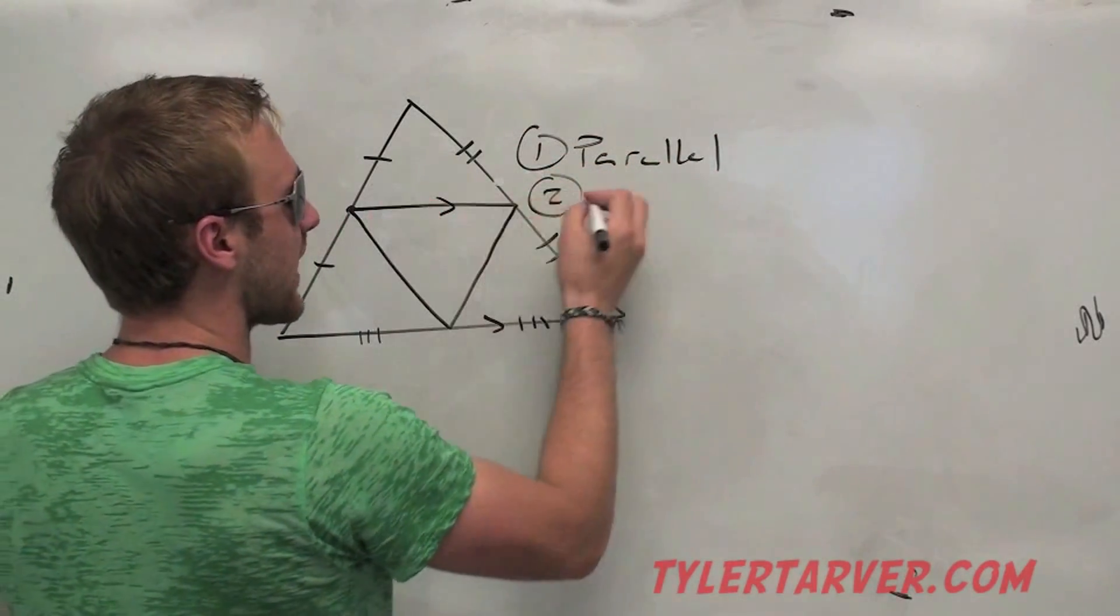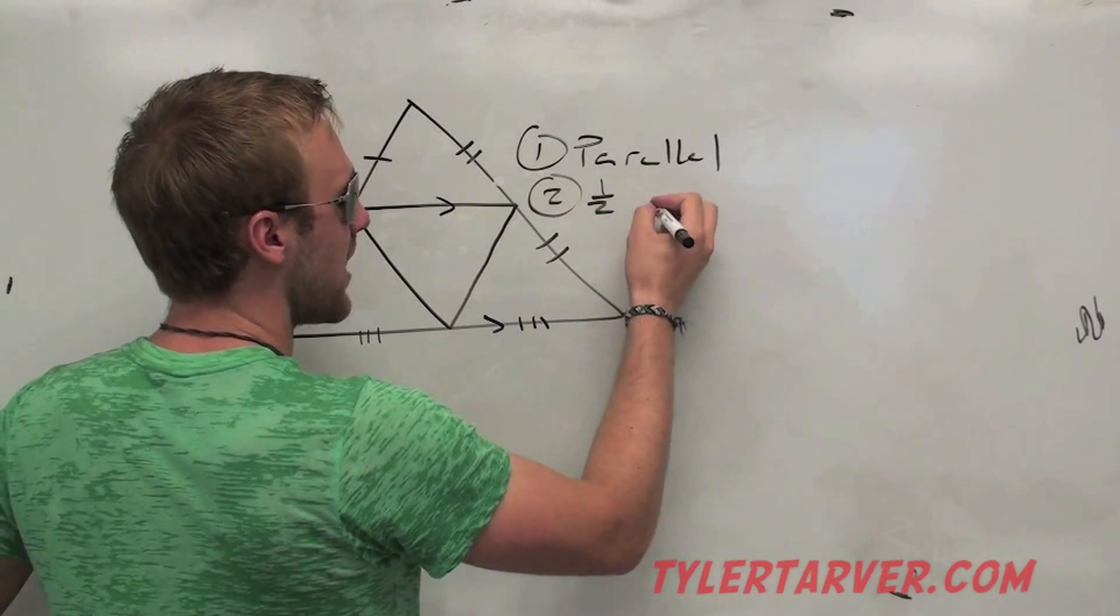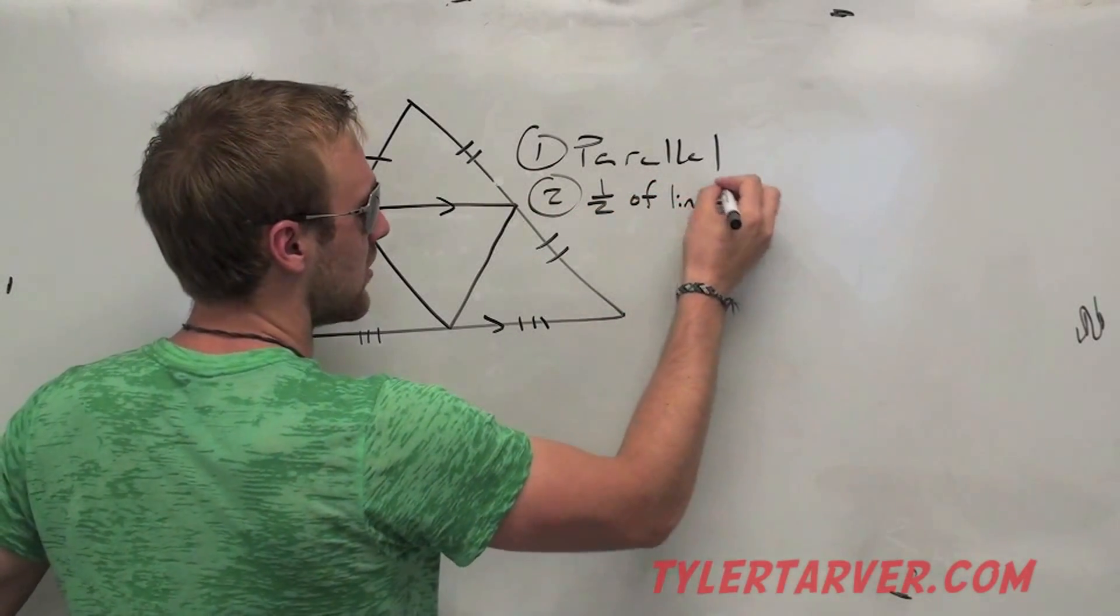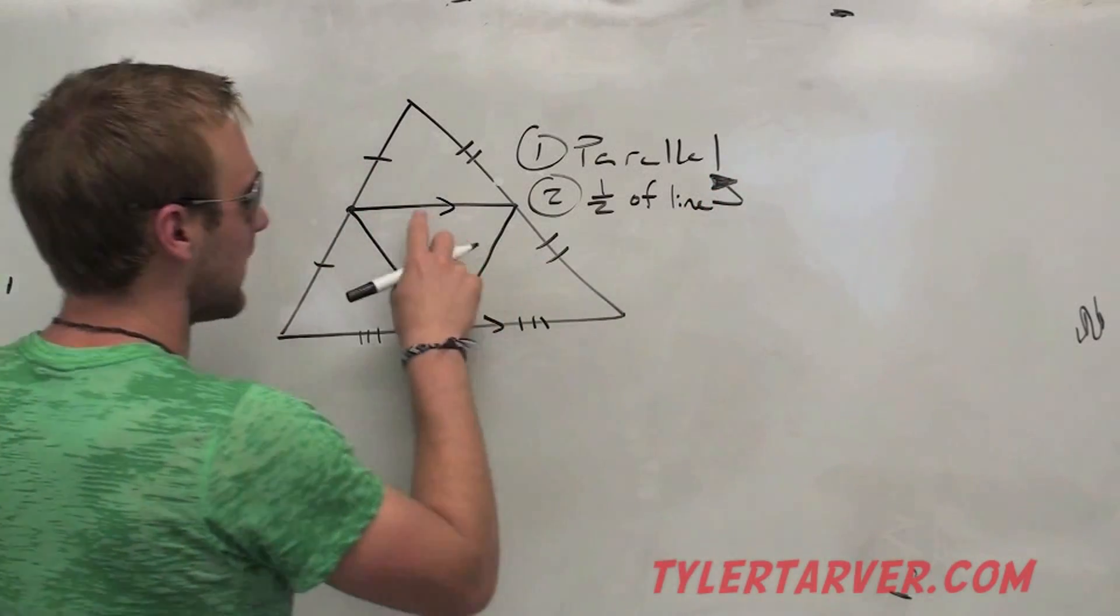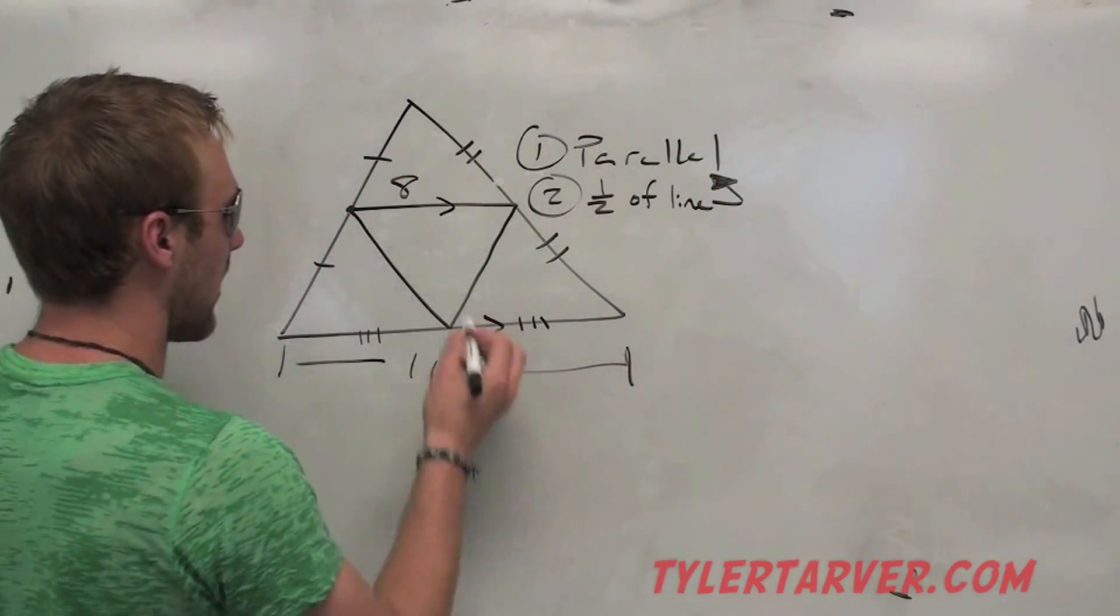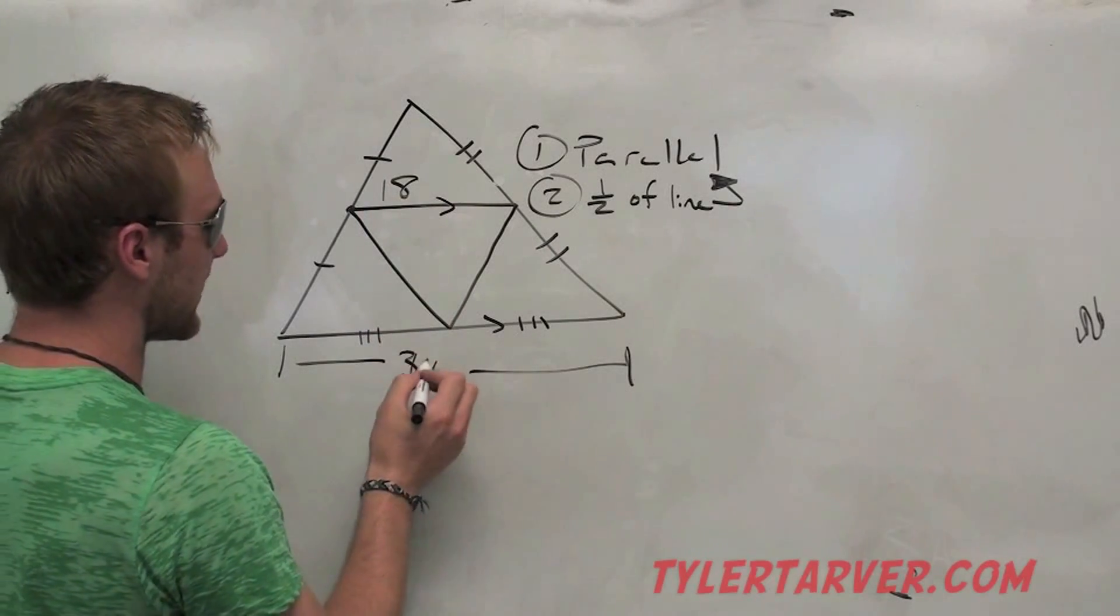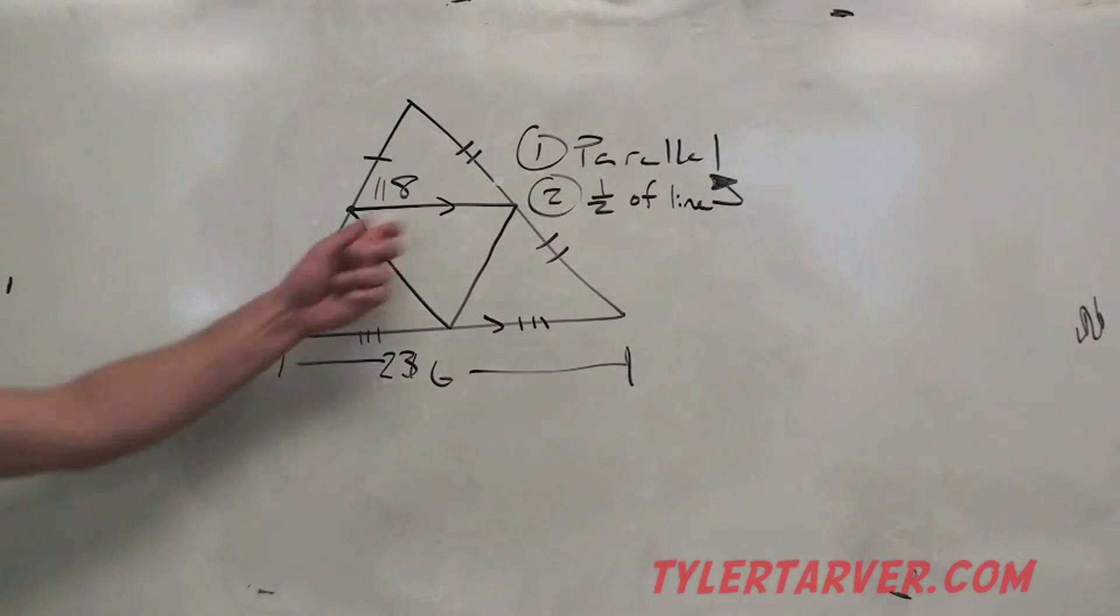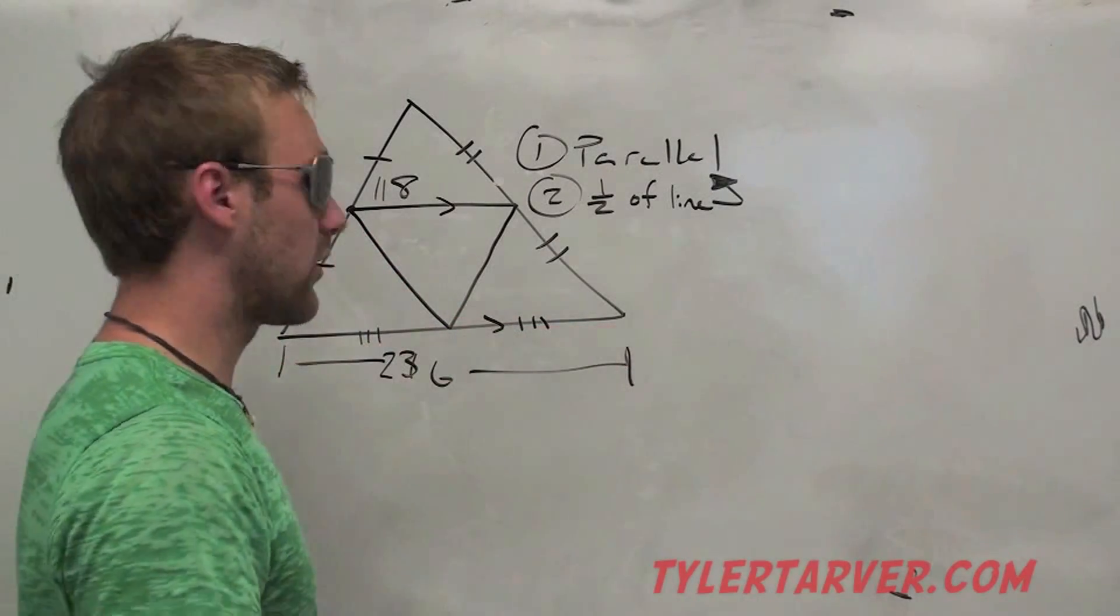Second thing, it is exactly half the measure of the line it's parallel to. Like, if this is eight, and this line is 16. If this is 18, this is 36. If this is 118, this is 236. This is always half of that line.